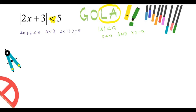Solving the first linear inequality: 2x less than 5 minus 3, so 2x less than 2, giving x less than 1. For the second: 2x greater than minus 5 minus 3, so 2x greater than minus 8, giving x greater than minus 4. We now have two sets of values of x, and the final answer is the intersection of x less than 1 and x greater than minus 4.